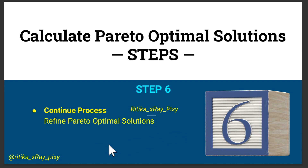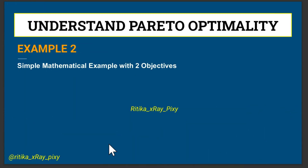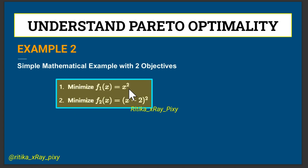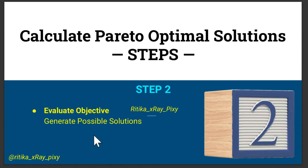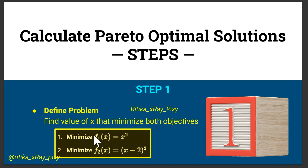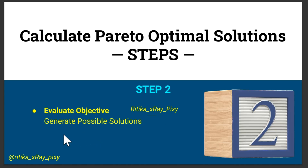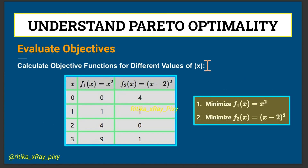Now we have a simple mathematical example with two objectives to optimize. The first objective function is f1(x) = x². The second objective function is f2(x) = (x − 2)². We want to find the values of x that minimize both functions f1 and f2. Now we will evaluate the objectives by calculating the objective functions for different values of x.